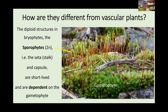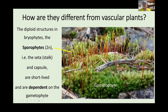Here we have a picture of the diploid structures of bryophytes — the seta, stalk, and capsule. The seta is the stalk, shown here in red, and the capsule is this pendant capsule hanging down. The interesting thing about the gametophyte generation is that it supports the sporophyte generation — it feeds it. Sporophytes are dependent on the gametophyte for a long time, as they eventually produce food through photosynthesis but initially rely entirely on the gametophyte.